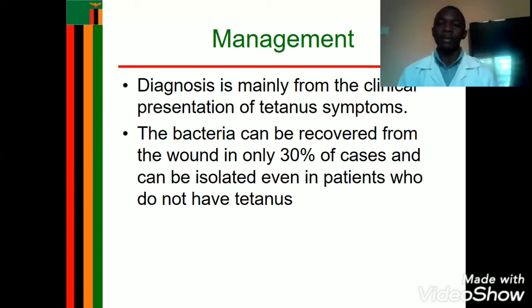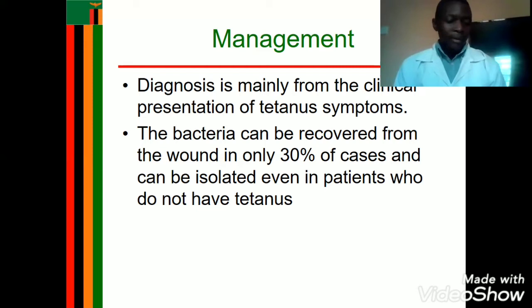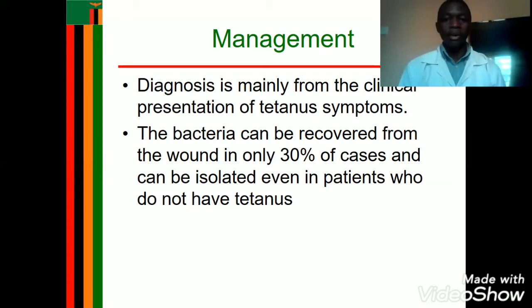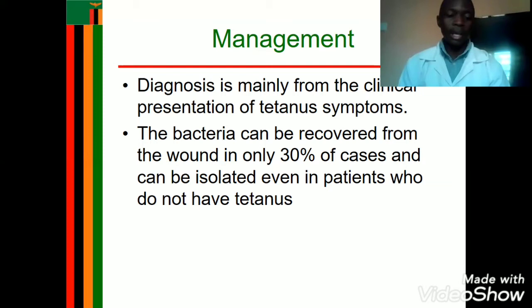Blood results will reveal leukocytosis — increased levels of leukocytes in the blood. Other investigations include blood culture and sensitivity. You can also get blood to rule out meningitis, as it may cause similar symptoms, or to rule out cerebral malaria. These investigations help confirm the diagnosis of tetanus as opposed to differential diagnoses.